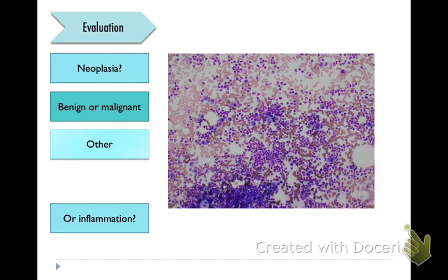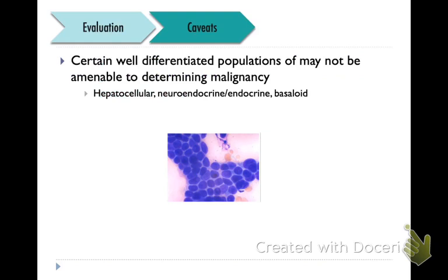Always an important thing to ask yourself is: is it really neoplasia or could it be inflammation? Because sometimes they can have overlapping features, or sometimes inflammation can start to look very scary and people confuse it for a malignancy. Some things to remember are that there are caveats in terms of well-differentiated populations that can look very normal cytologically without criteria of malignancy, but may on histology be determined malignant. Some notorious types are hepatocellular in origin, endocrine/neuroendocrine, and some forms of basaloid tumors that can look well differentiated but behave aggressively. That's your crash course in cytology — we'll see you in class and go over a bunch of cytos.